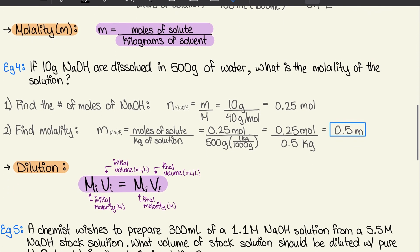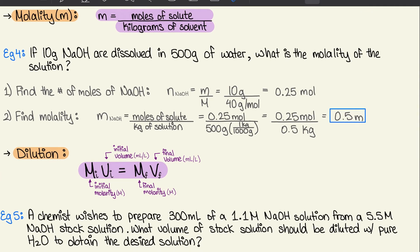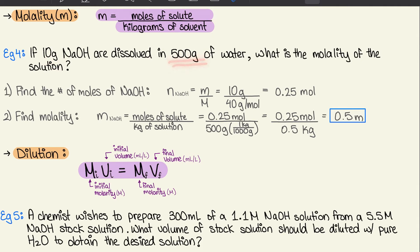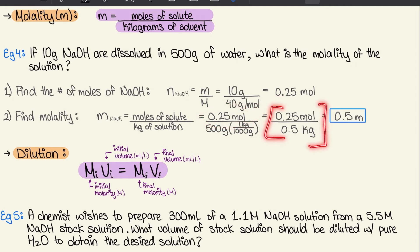Molality (m) = moles of solute / kilograms of solvent. Example: 10 g of NaOH dissolved in 500 g of water. Moles of NaOH = 10 / 40 = 0.25 mol. Convert 500 g to 0.5 kg. Molality = 0.25 mol / 0.5 kg = 0.5 m.